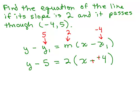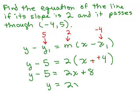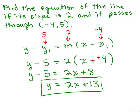Now let's solve for y. I apply the distributive property on the right side: 2 times x plus 4 gives 2x plus 8. Then I add 5 to both sides to get y equals 2x plus 13. What's nice about this method is that as soon as you solve for y, you're done — you're not solving for b and then going back to plug it in. Both methods give the correct equation of the line.